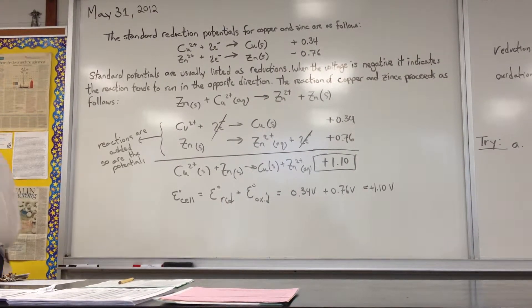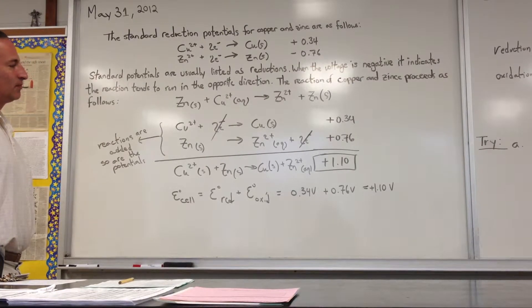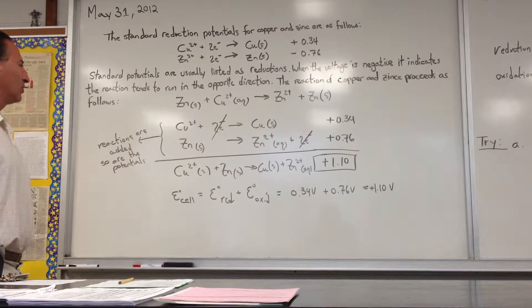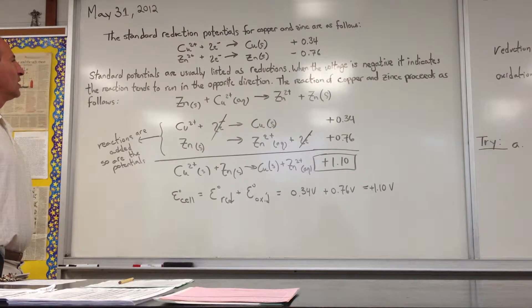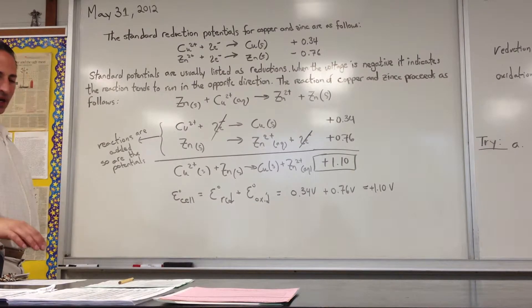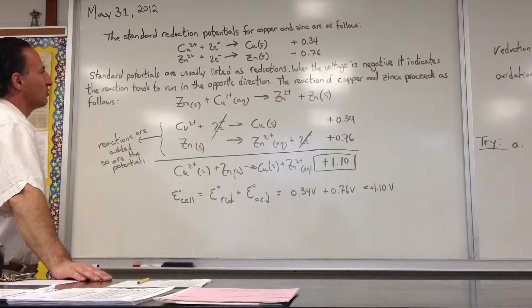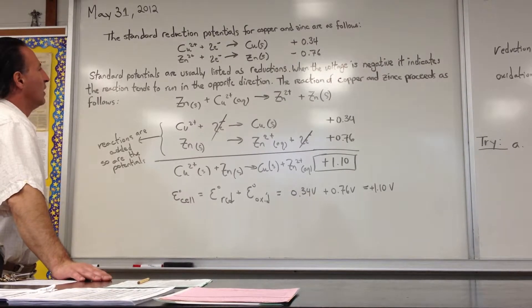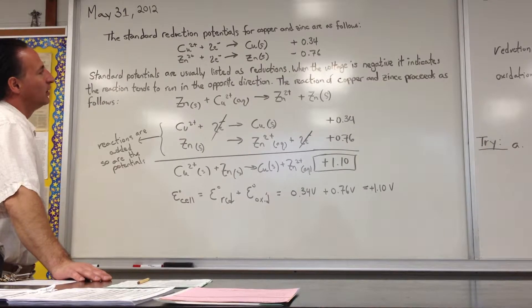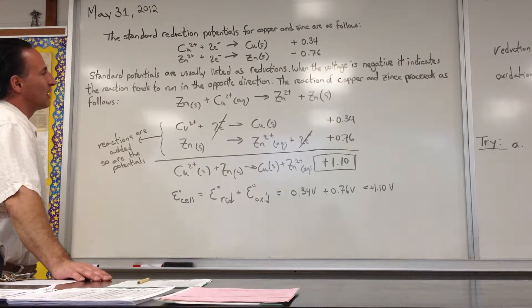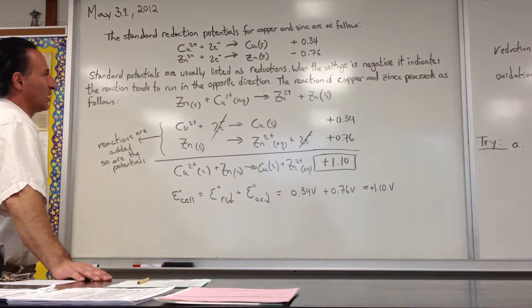Today we're talking about how to calculate cell potentials using standard reduction potentials. Usually when electrochemical reactions are listed in indices of books or in the CRC, they're listed as reduction potentials. In a reduction potential, electrons are being added to an ion to reduce it to its metallic state, or its elemental state to be more accurate.